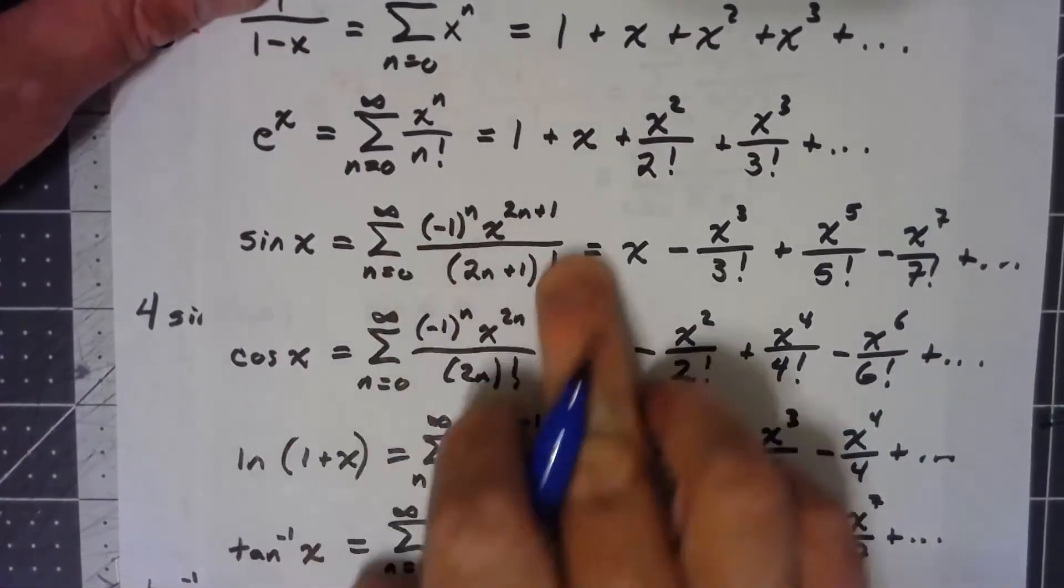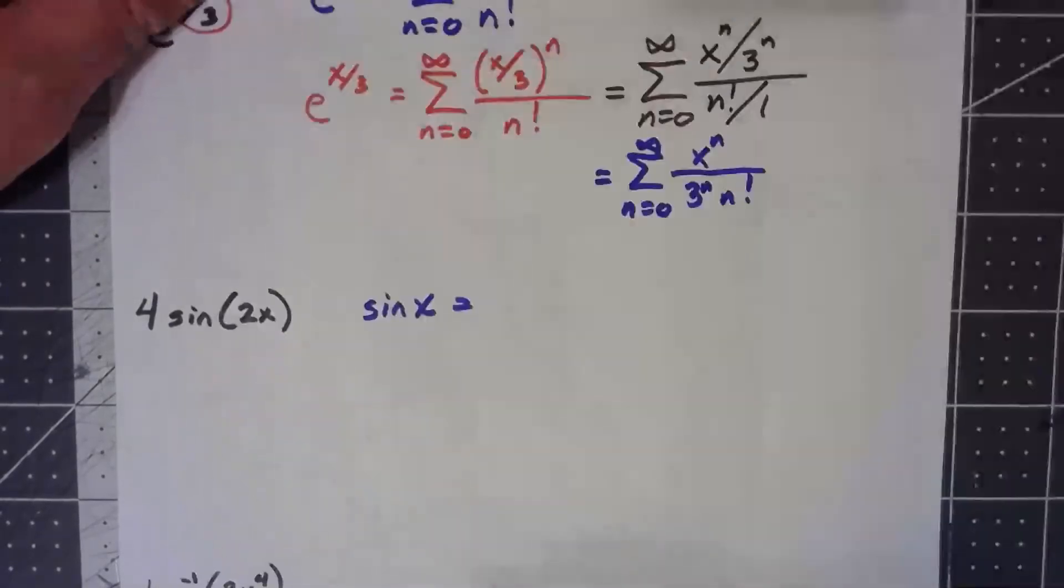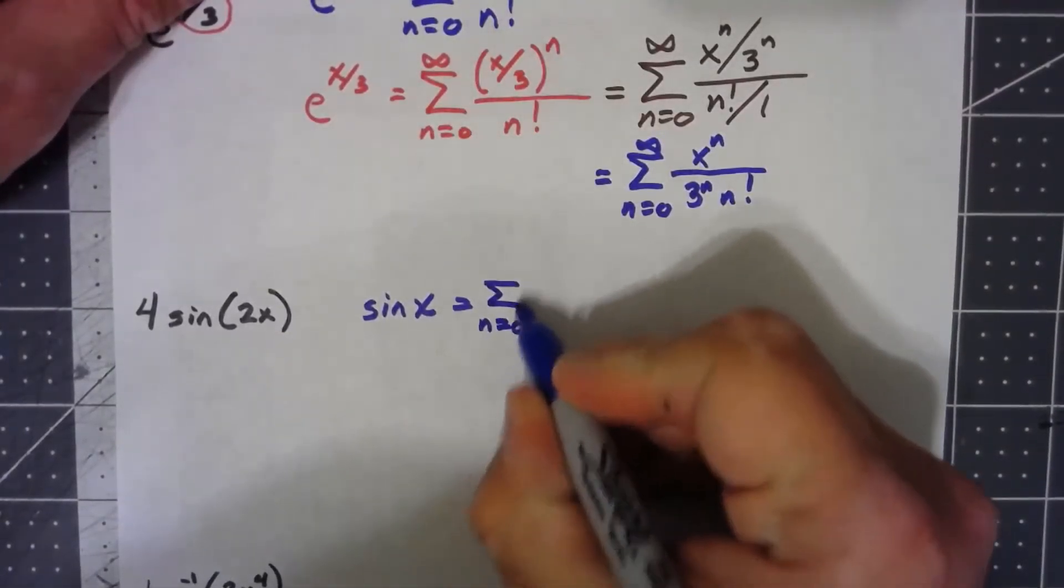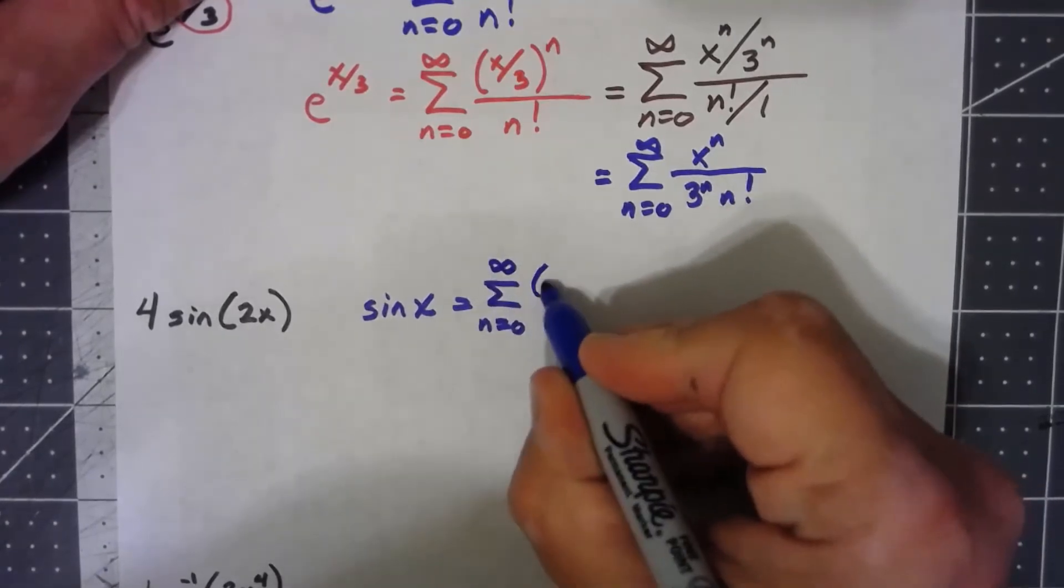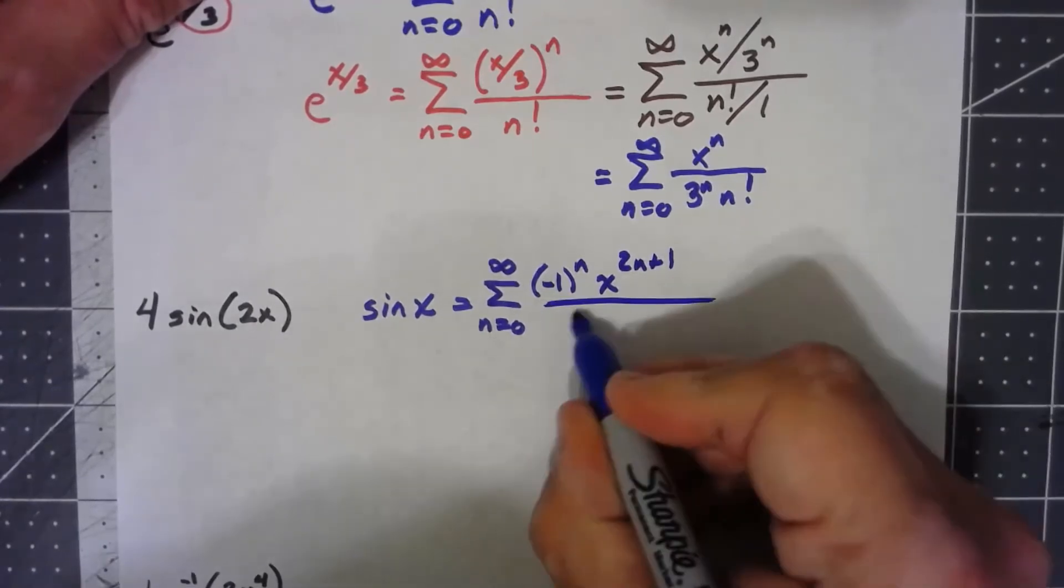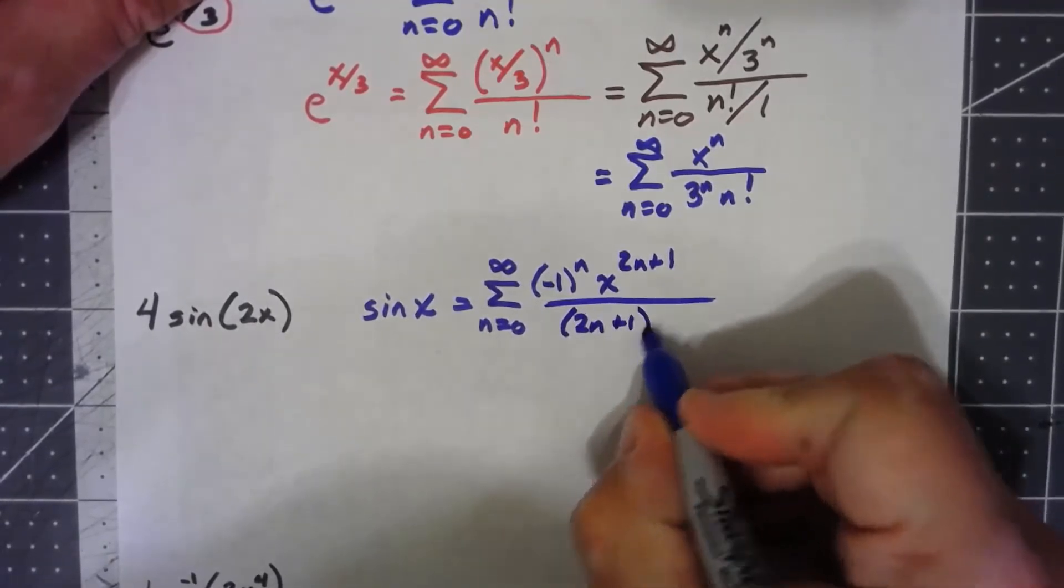So we got the sum from n equals 0 to infinity, negative 1 to the n, x to the 2n plus 1 over 2n plus 1 factorial.